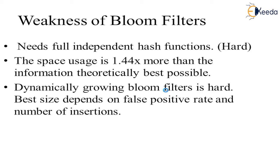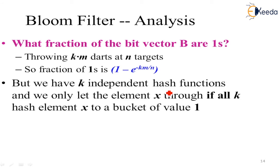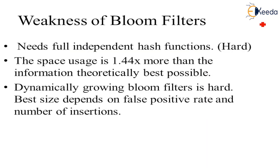For Bloom filter analysis: what fraction of the bit vector bits are set? Think of throwing k*m darts at n targets. The fraction of ones is: 1 minus e raised to the power of negative k*m/n. We have k independent hash functions, and we only let an element x through if all k hash functions confirm it. This gives us the analytical basis for understanding the false positive rate.